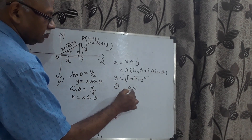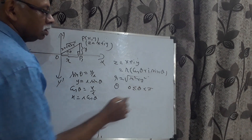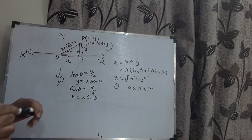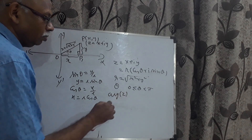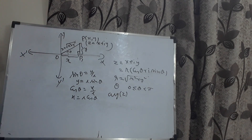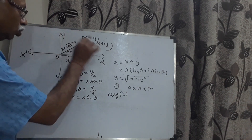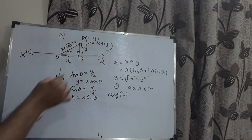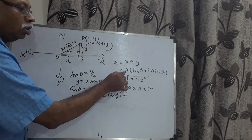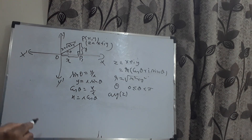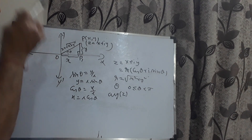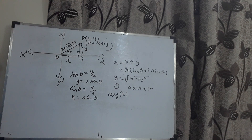Theta, satisfying minus pi less than theta less than or equal to pi, is known as the principal value of the argument. It is also called the argument of the complex number — argument and amplitude are both the same. This representation z equals r(cos theta plus i·sin theta) is known as the polar form, or modulus-amplitude form, or modulus-argument form.